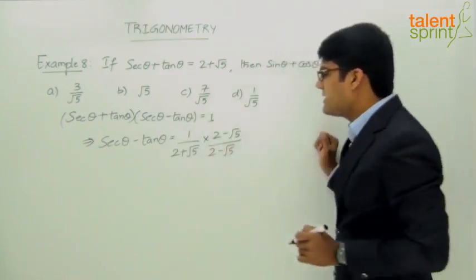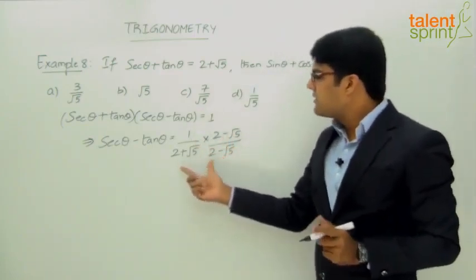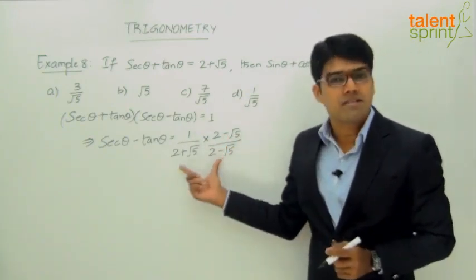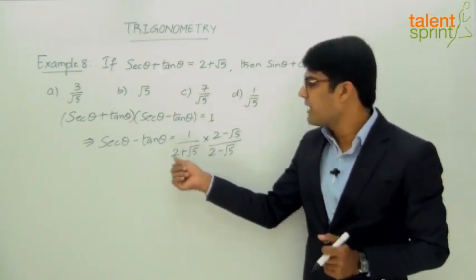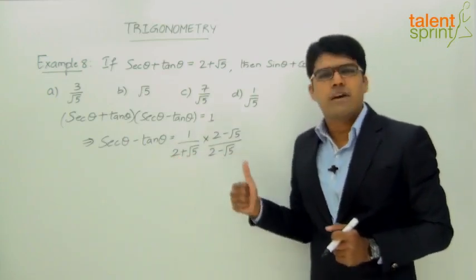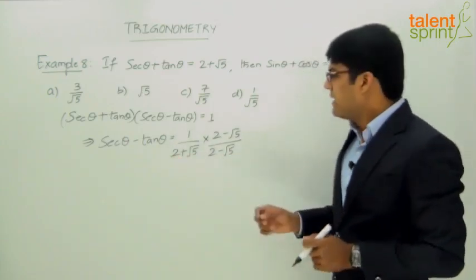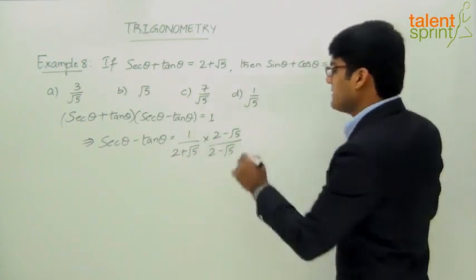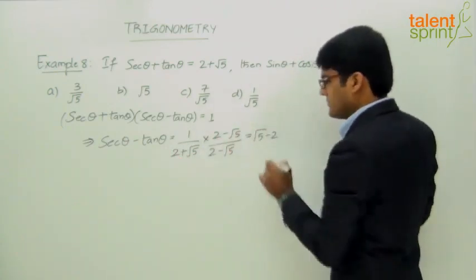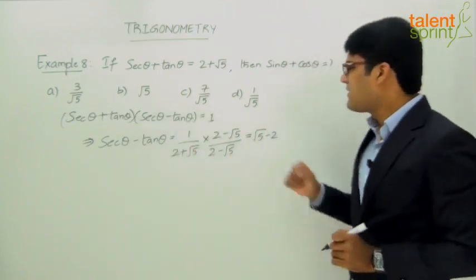After rationalization, the numerator becomes 2 minus root 5, and the denominator is (2 plus root 5)(2 minus root 5) which equals 2² minus (root 5)², giving 4 minus 5 equals negative 1. So we get (2 minus root 5) divided by (negative 1), which simplifies to root 5 minus 2. Therefore, secant theta minus tan theta equals root 5 minus 2.